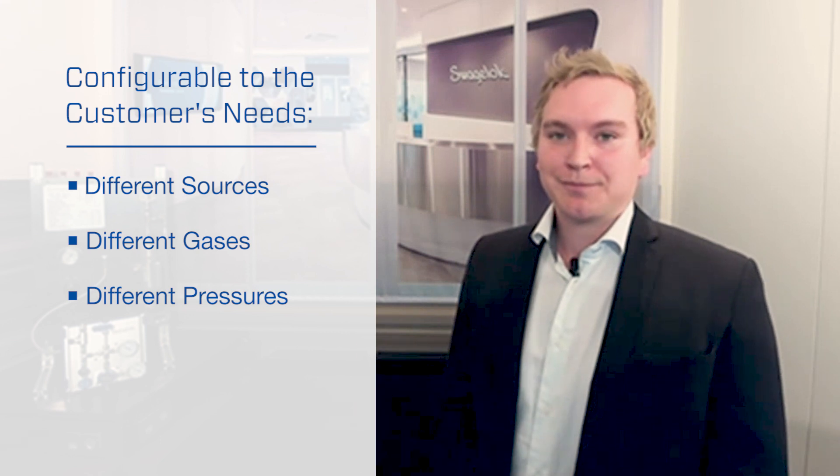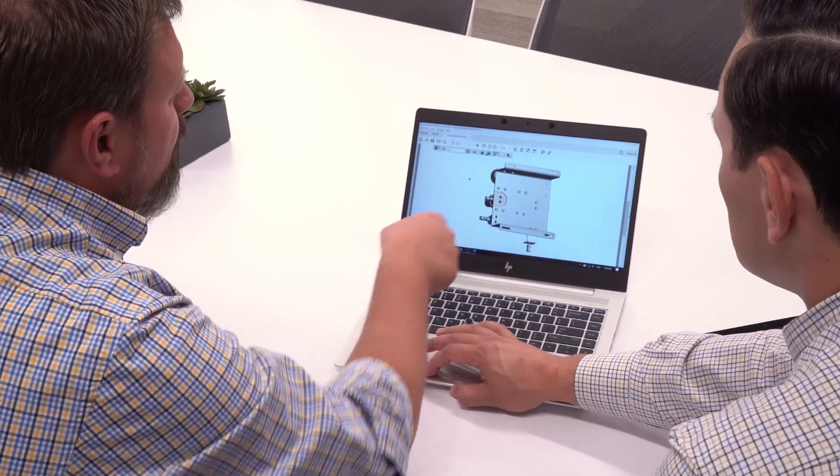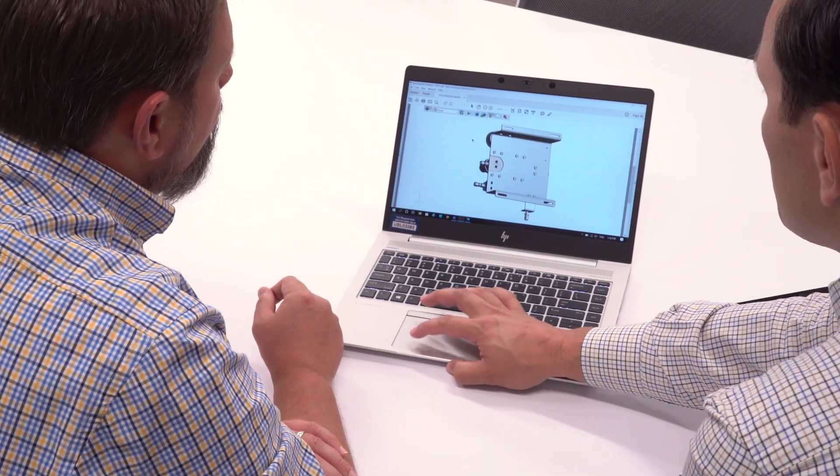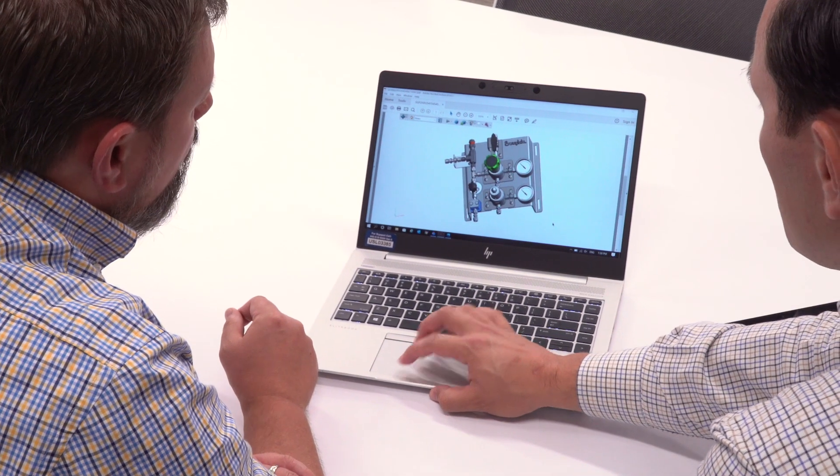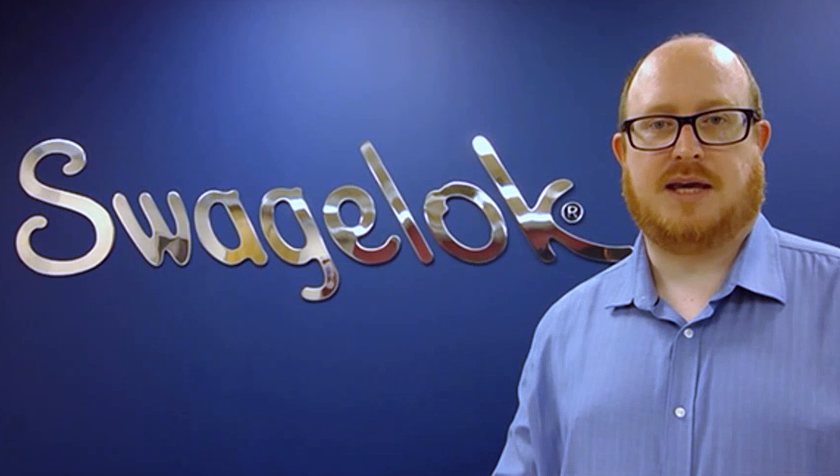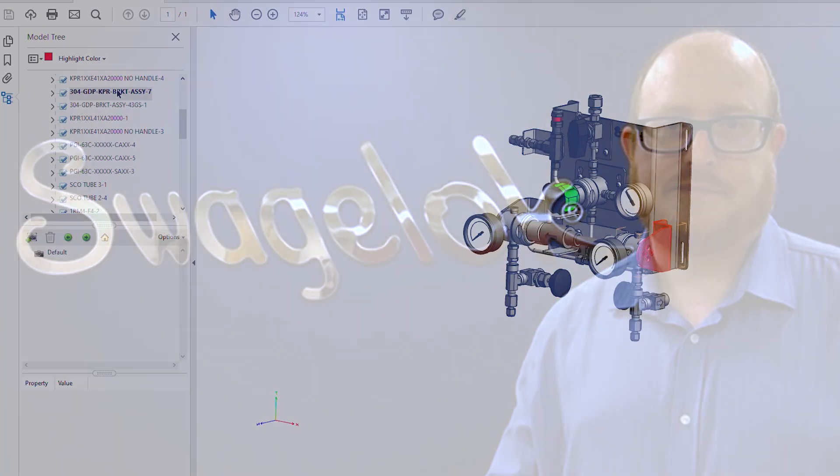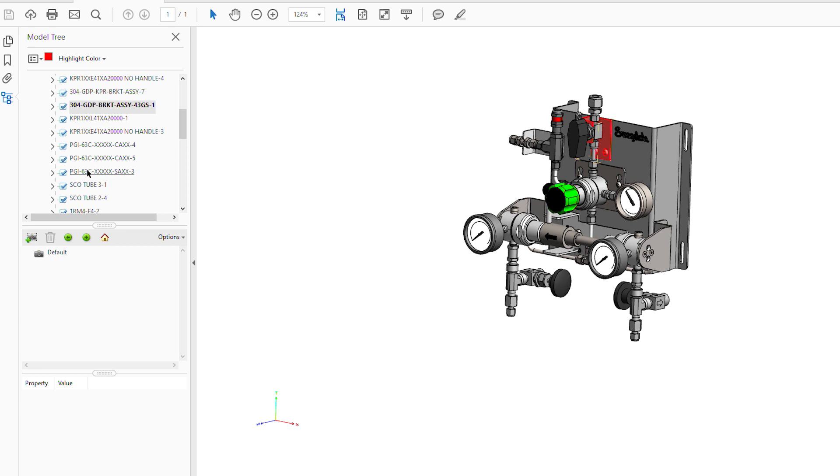If the customer does want something truly bespoke, straight away they get to see what the panel is going to look like: the dimensions, the layout, where the vent connections are, where the inlet is located, how many valves are there, whether they need an additional bleed valve or purge valve. Things that wouldn't necessarily be initially obvious become instantly clear. I can go through every single component if they need to and have them instantly understand what they're going to receive.